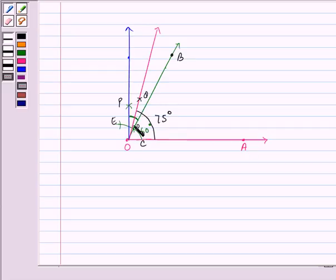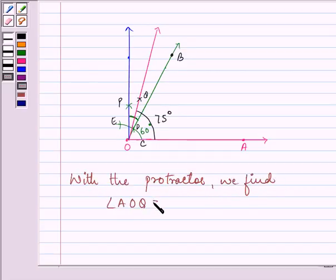So, angle AOB plus angle BOQ gives you a full 75 degree angle, that is 60 degrees plus 15 degrees. And by protractor also, we find angle AOQ equal to 75 degrees.